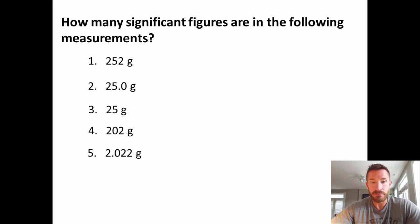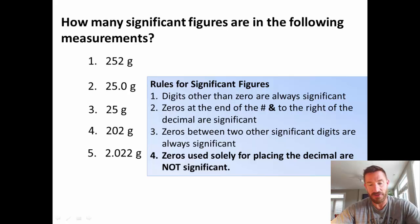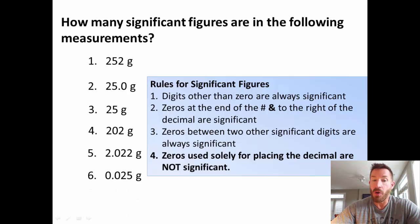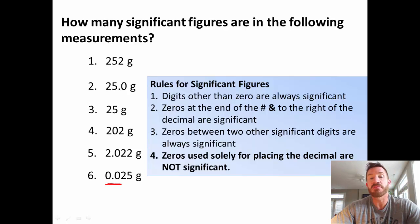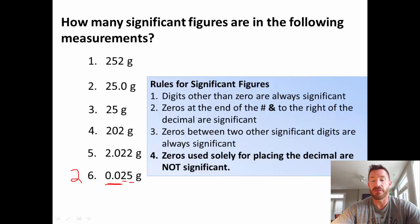Our last rule: zeros used solely for placing the decimal are not significant. For the number 0.025, the zeros at the very beginning are just placeholders — they're not showing the precision of the measurement. We simply count the 2 and the 5, so this number has two significant figures.